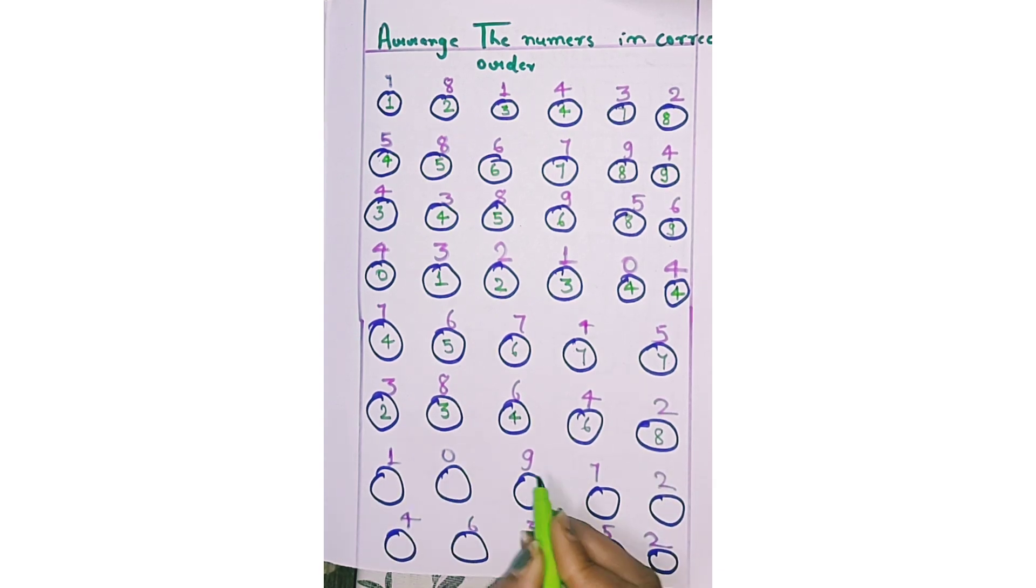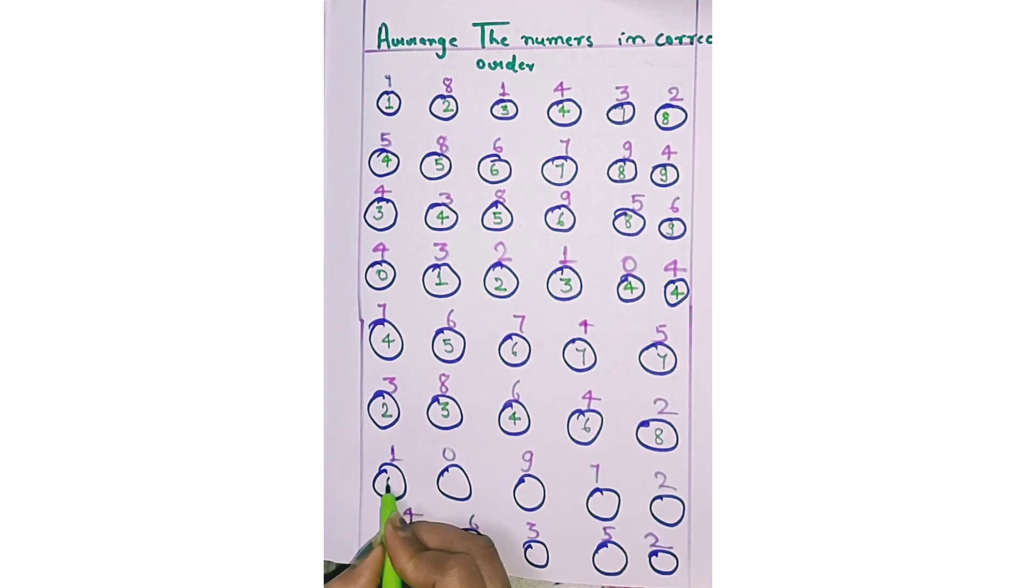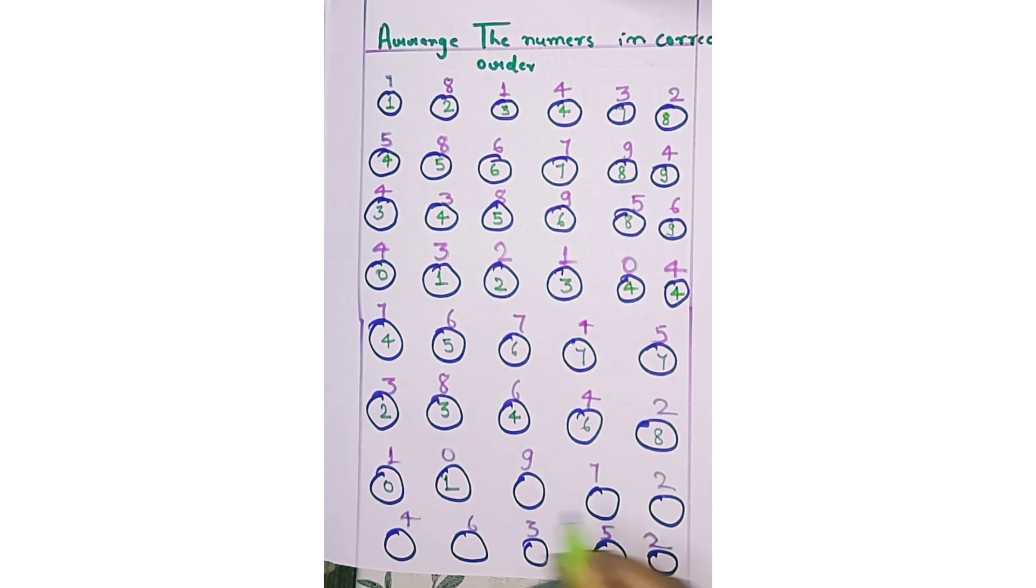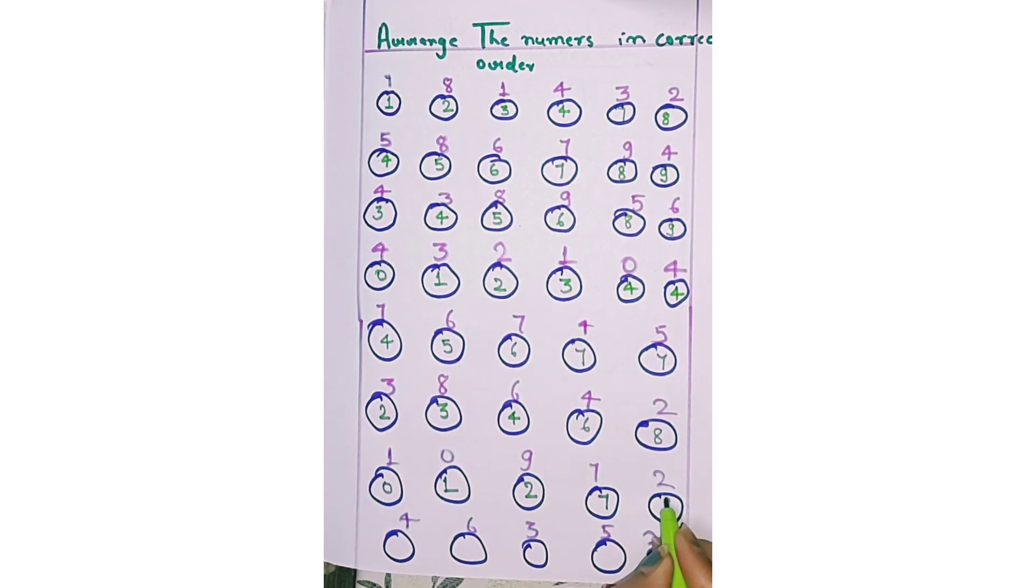Next 1, 0, 9, 7, 2. First 0, 1, 2, again 7, and last 9.